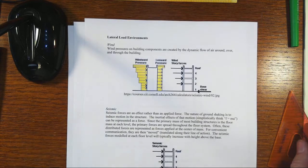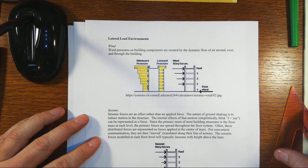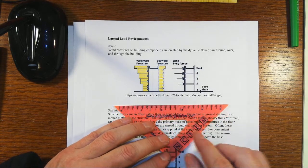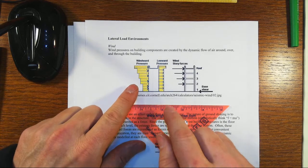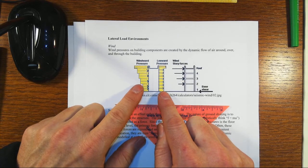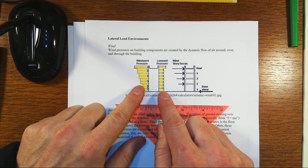Before we get into the different types of systems, let's talk about what those systems are trying to respond to. For instance, when we have extreme winds, we have to think about how the wind flows around the building and how that sets up windward pressures from the upstream side of the wind.